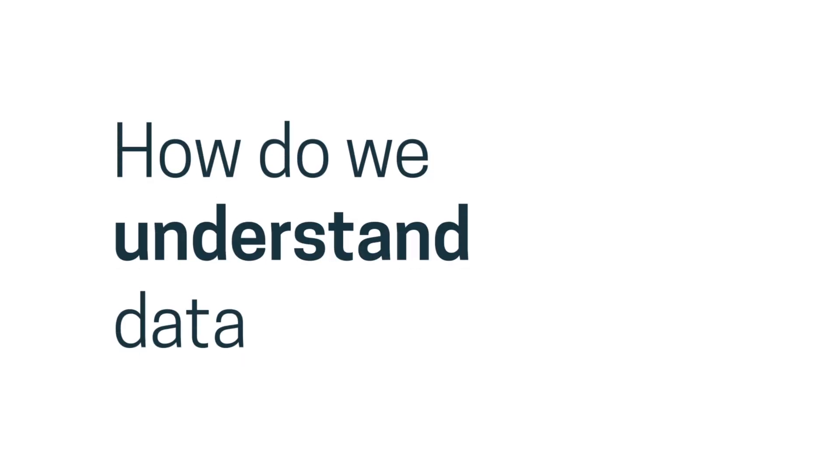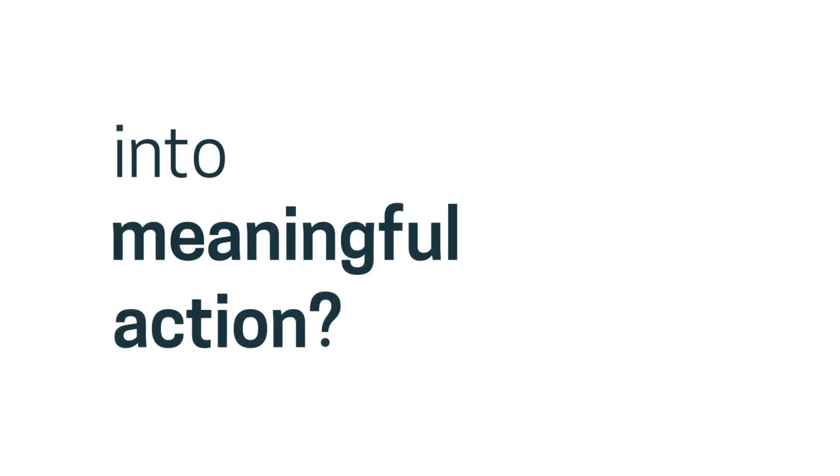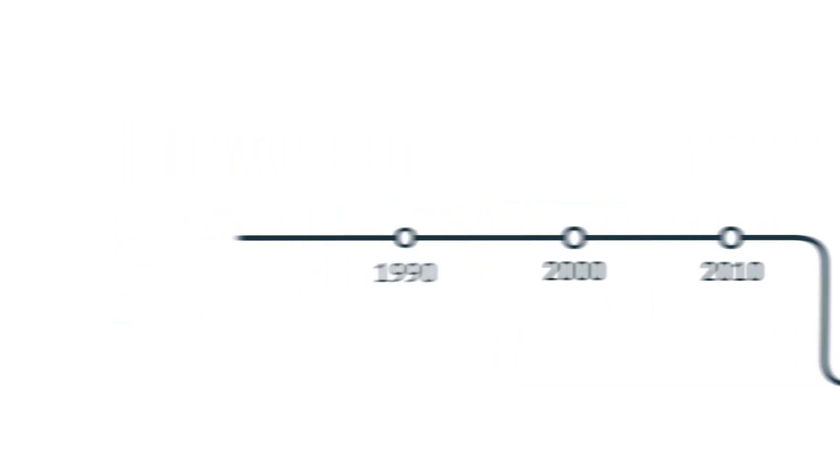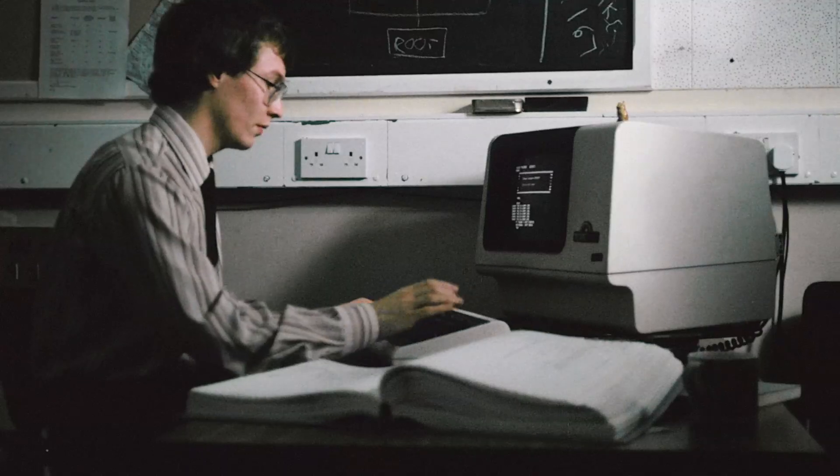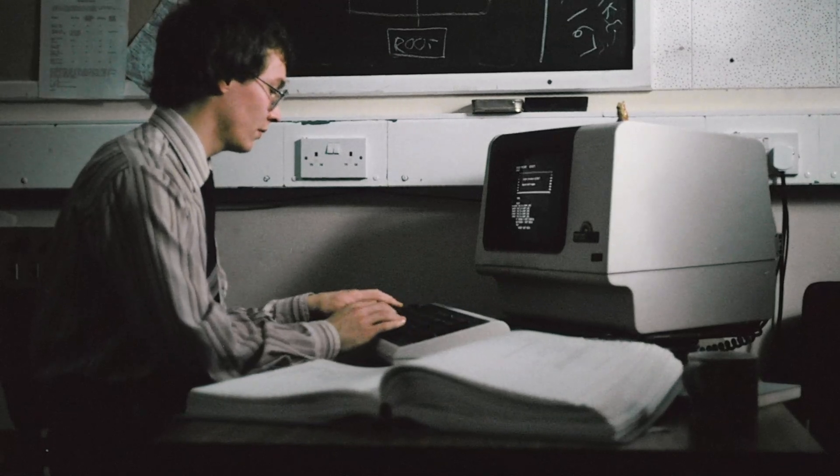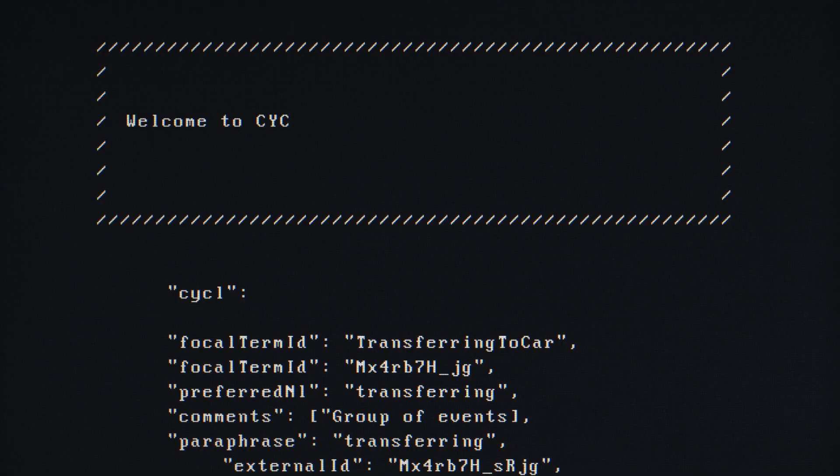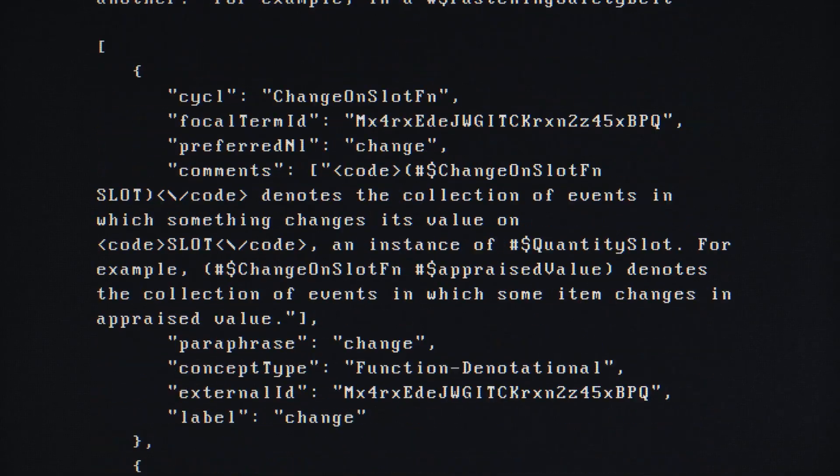How do we understand data and translate it into meaningful action? These are precisely the questions we started asking 30 years ago. In 1981, a small group of computer scientists started working toward a shared vision of building an intelligent system that could use real-world knowledge to understand the data it was interpreting.